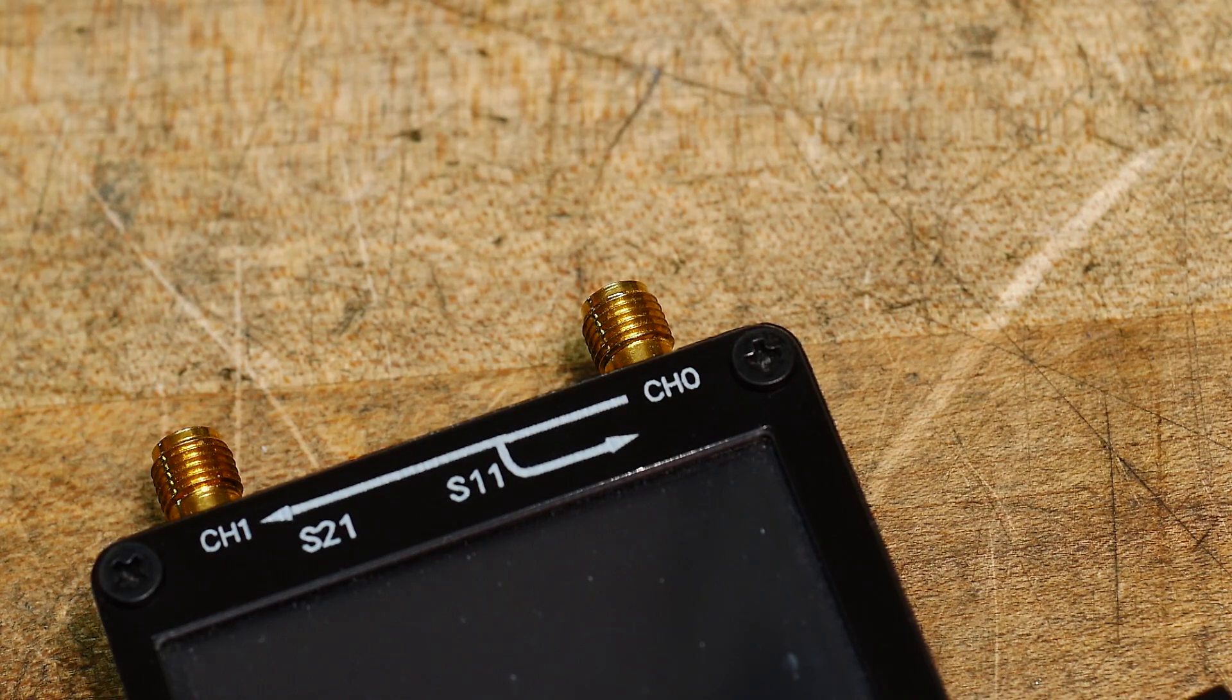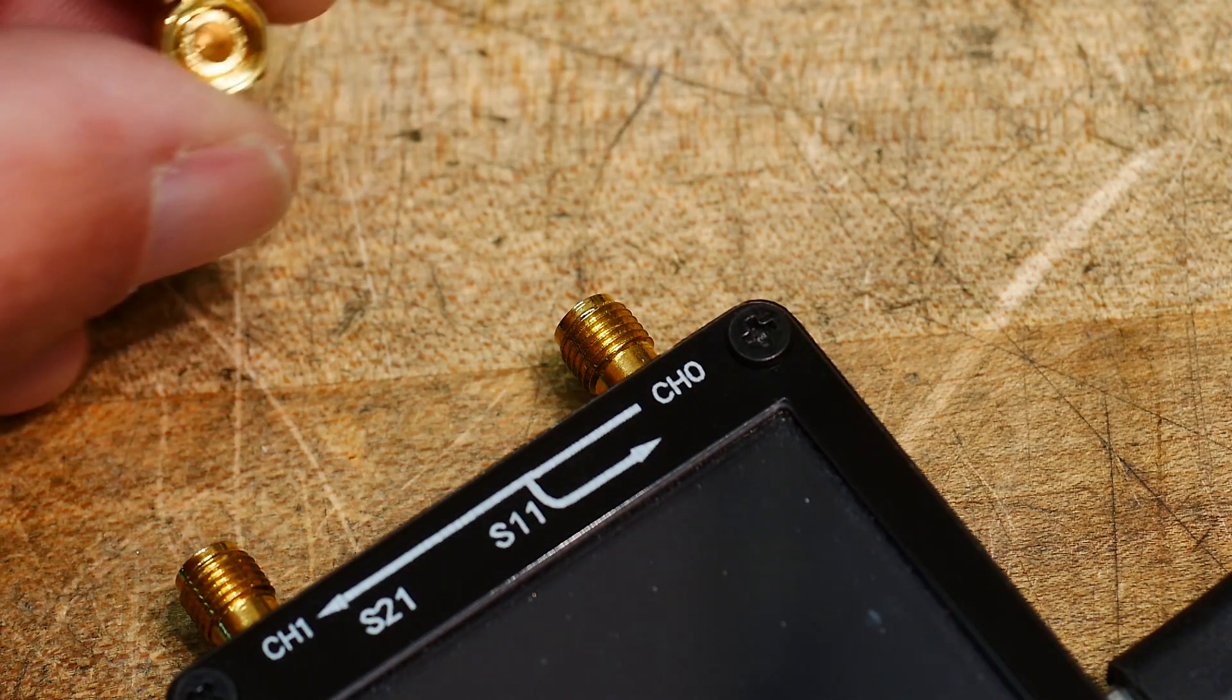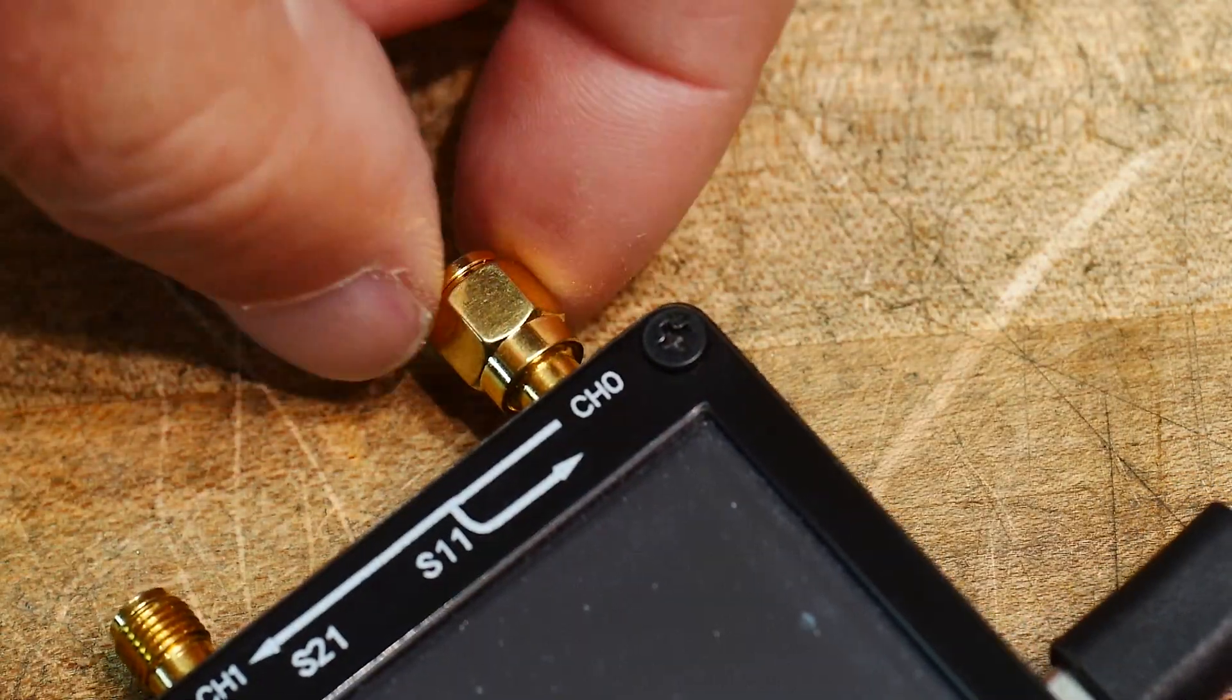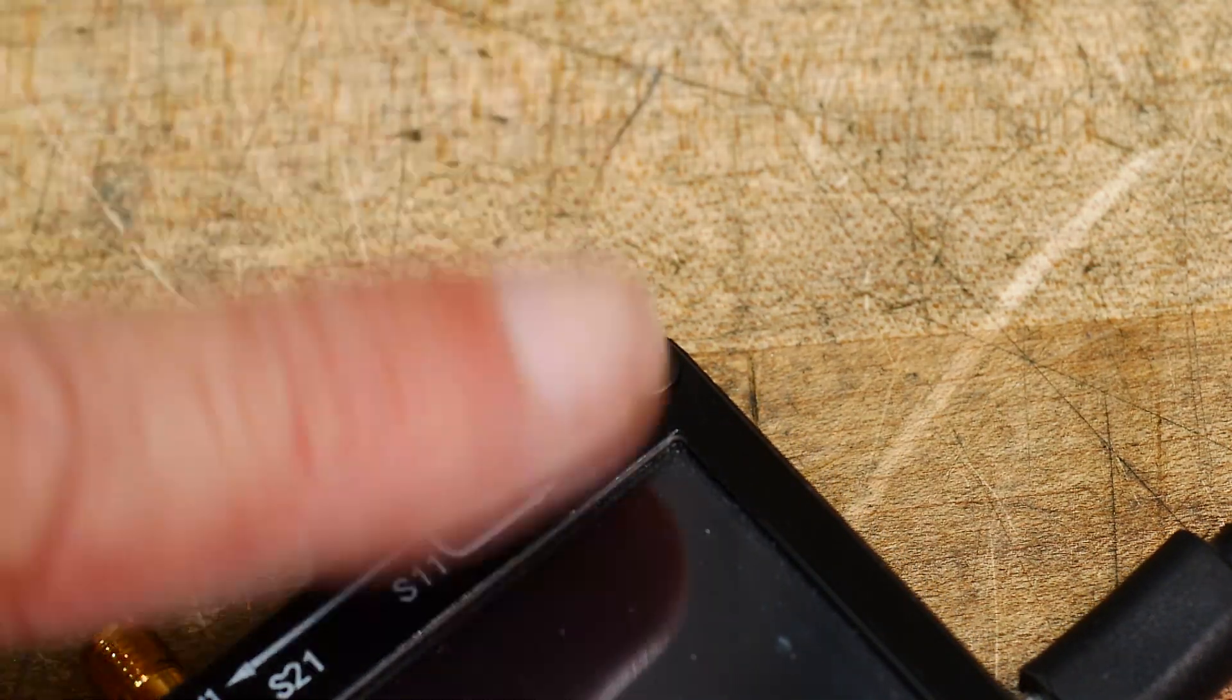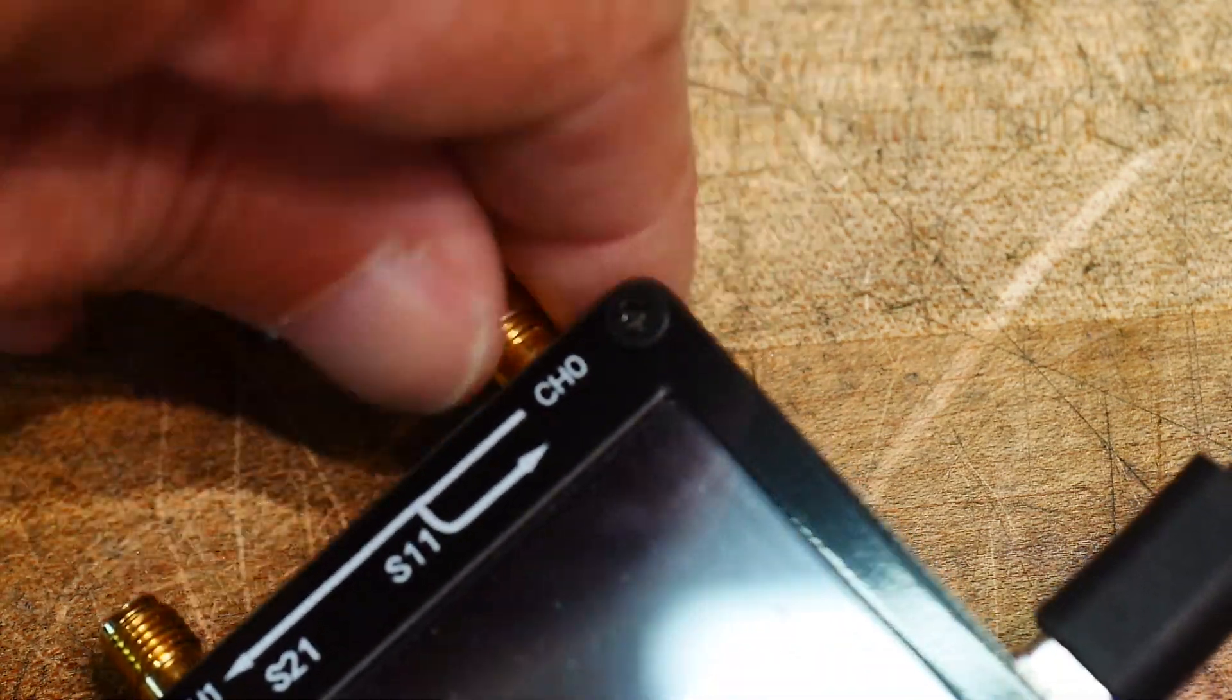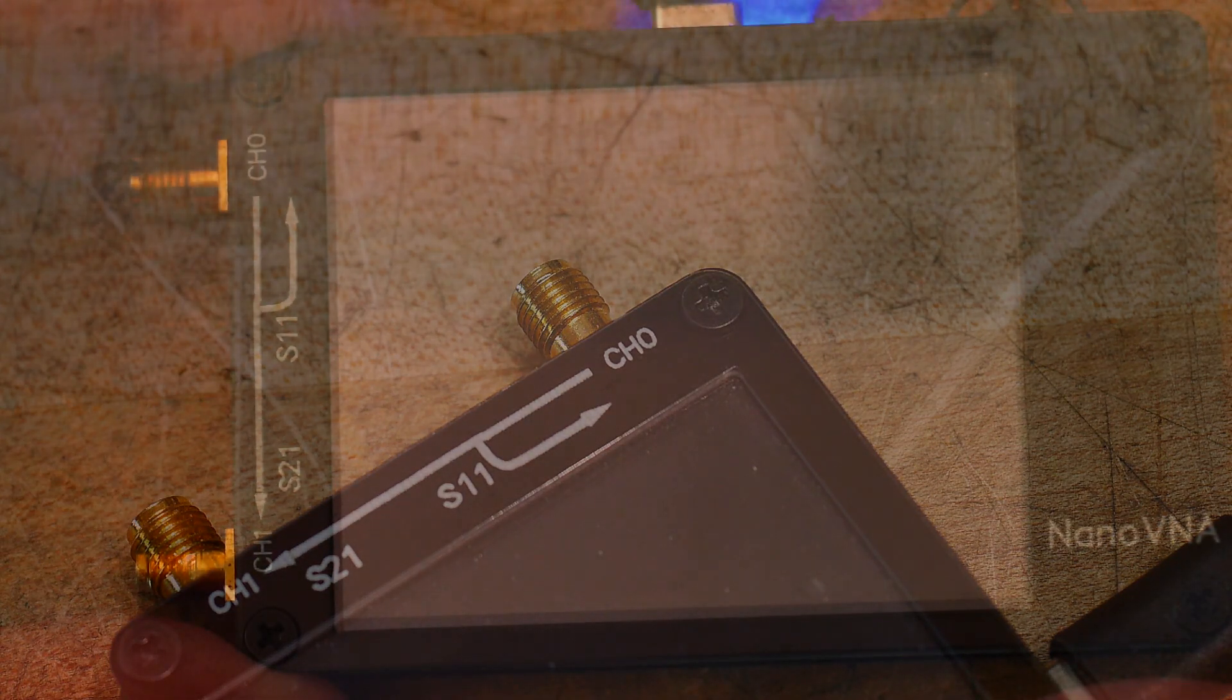So we're going to go through a calibration of the device. And during the calibration we need to attach these open shorts and loads. So how do we do that? Well we're going to screw them onto this connector, the channel 0. So if we're asked to use the open we'll take the open. We'll put it on the SMA and we tighten it down and we just hand tighten it. Looks like you can put a wrench on here. Don't do that. Just hand tighten it. Not too tight. But making good electrical contact. When asked to put on the short you do the same thing.